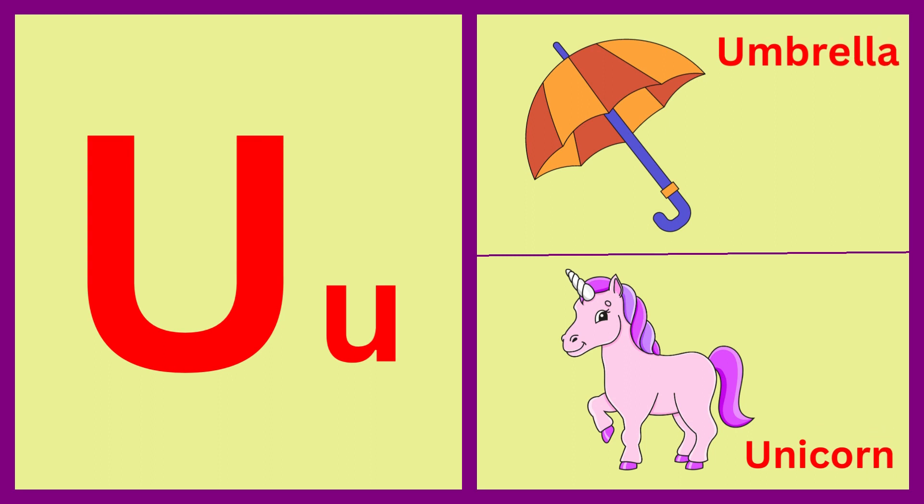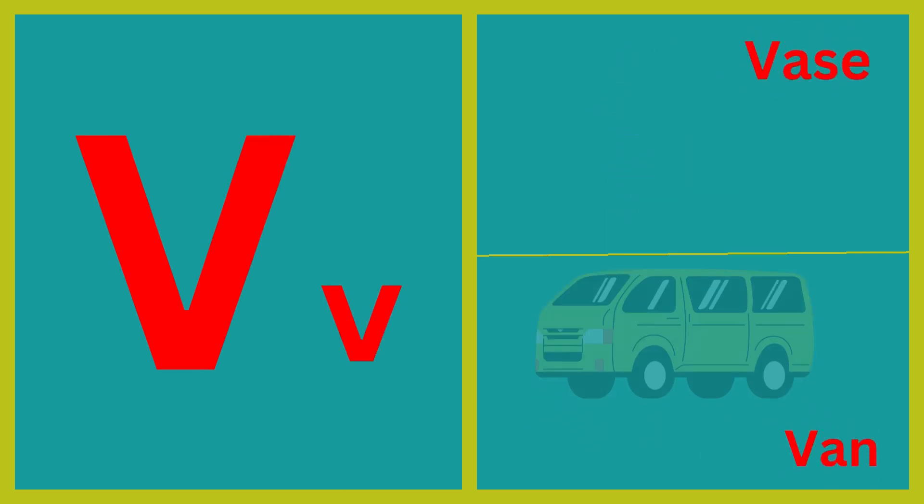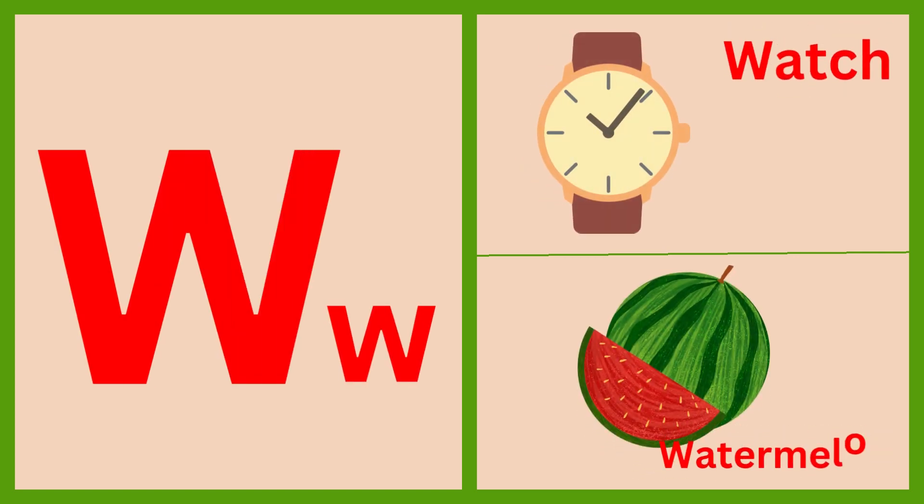U for umbrella, U for unicorn, V for vase, V for van, W for watch.